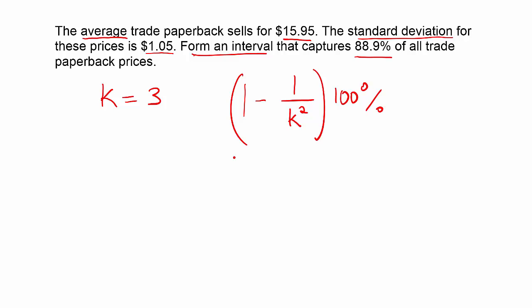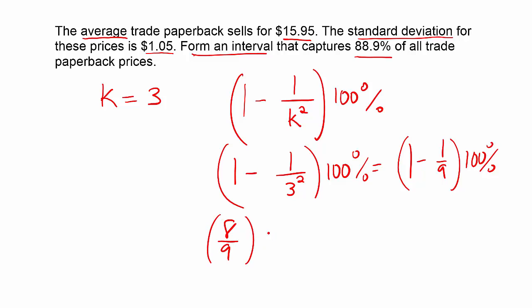And then it's multiplied by 100% to convert it into a percent. So let's see if 3 would indeed work here. k squared would be 3 squared or 9 times 100%. And that will give you 1 minus 1 ninth times 100%. And whether you use your calculator or you do it in your head, 1 can be written as 9 ninths. So 9 ninths minus 1 ninth is 8 ninths.